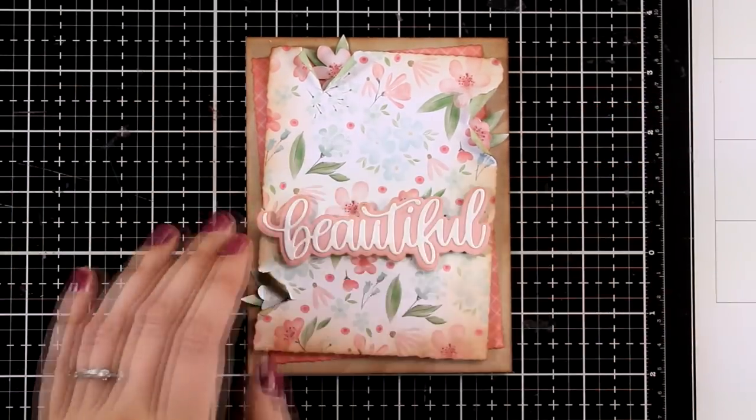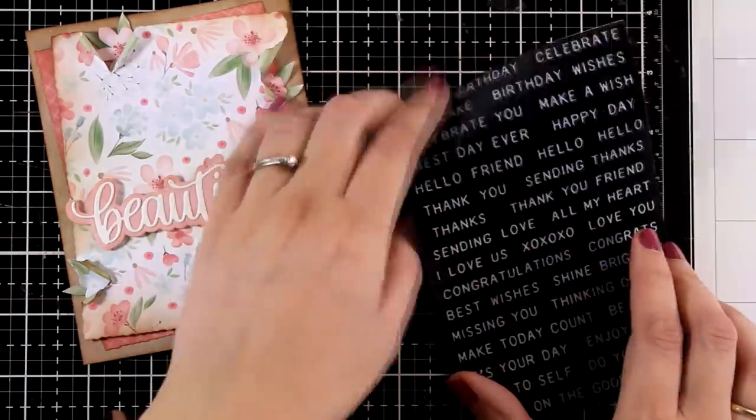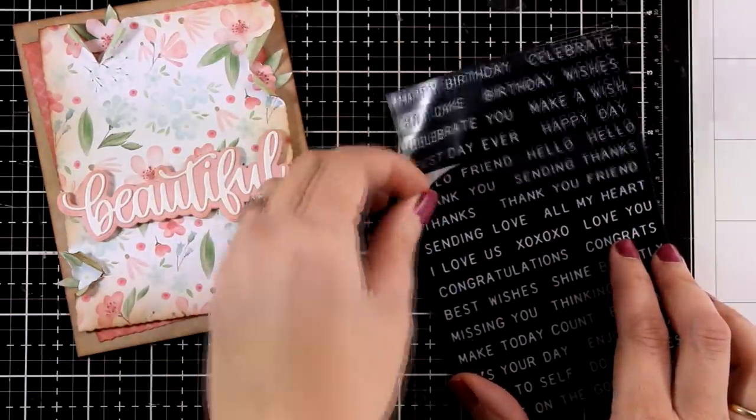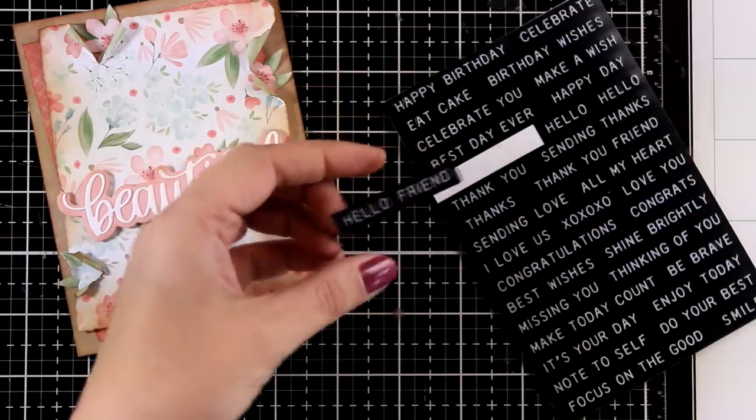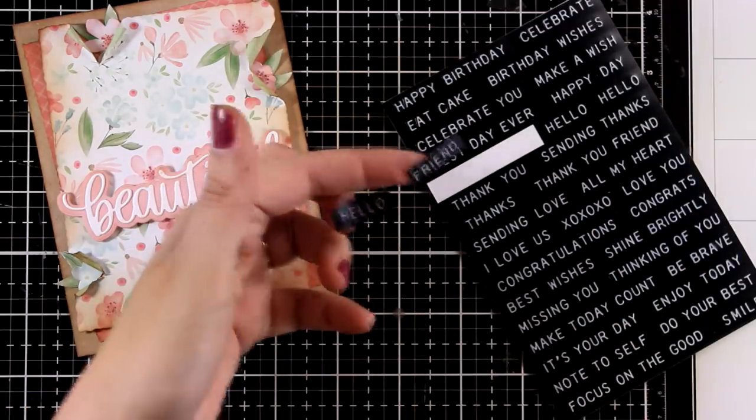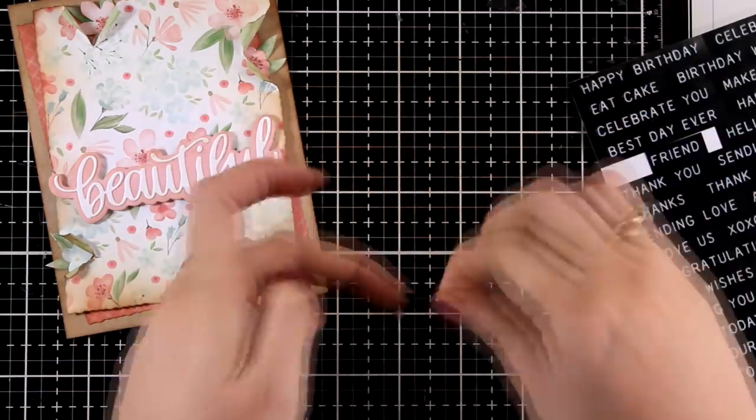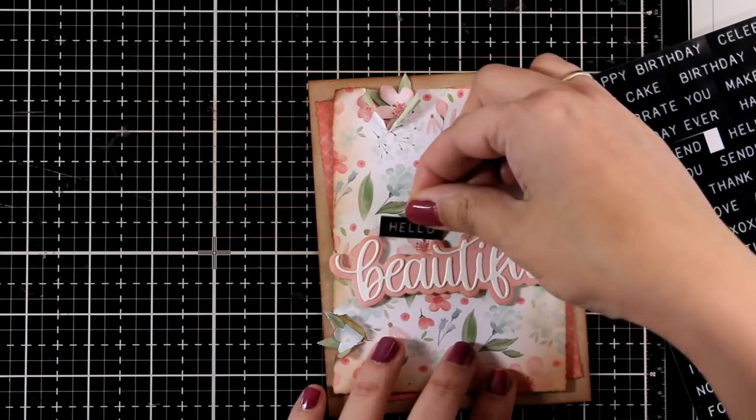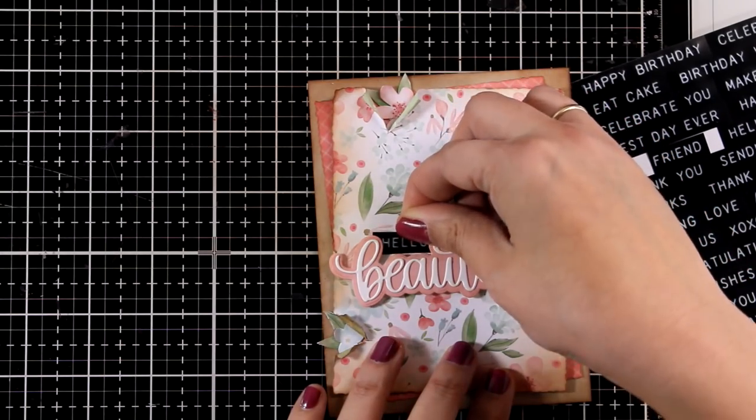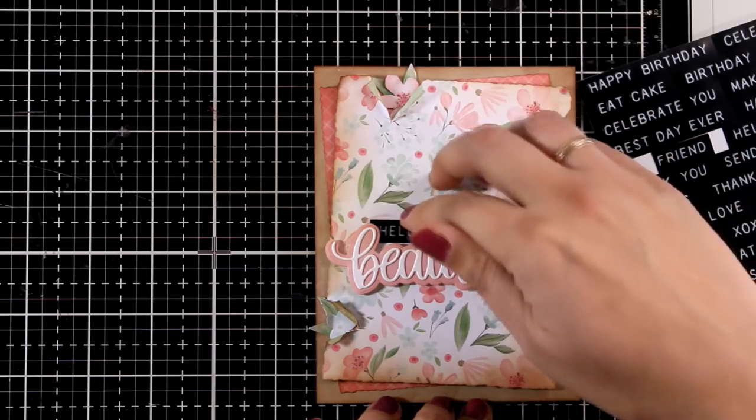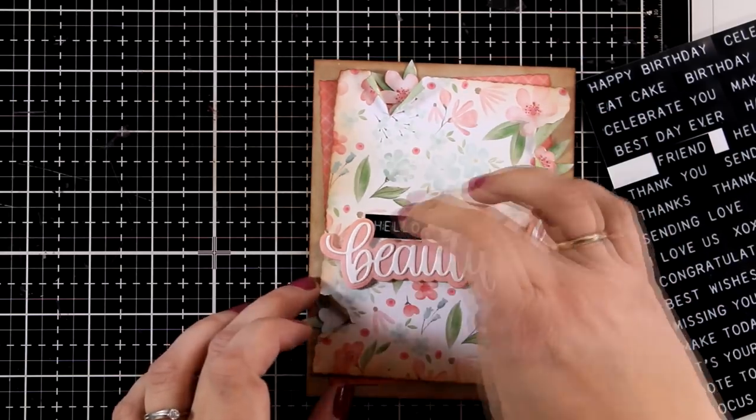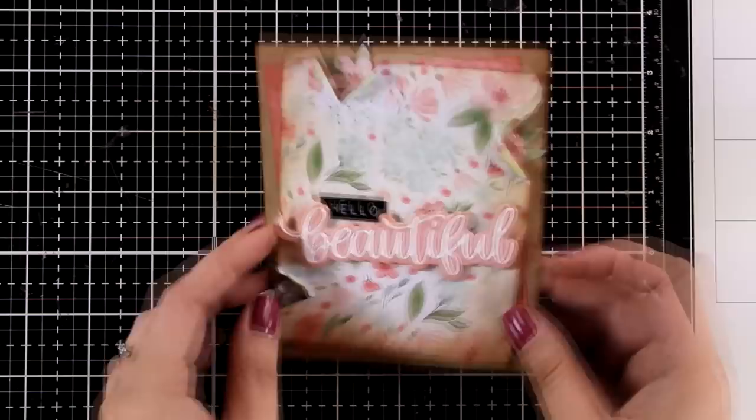Now I'm going to bring in the stickers and use the one that says 'hello friend.' Instead of using the whole thing, I'm just going to use 'hello' and tuck it underneath so the whole thing reads 'hello beautiful.' It's a lovely card perfect to send as spring is coming.